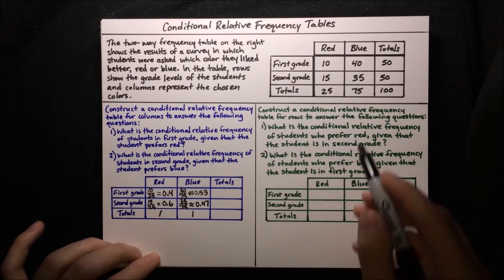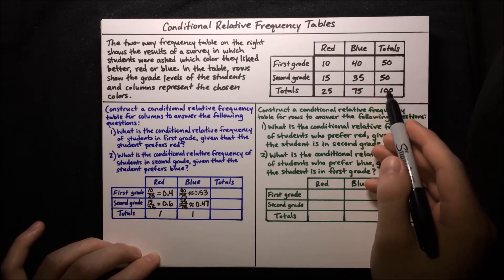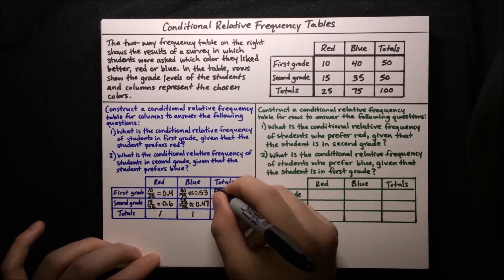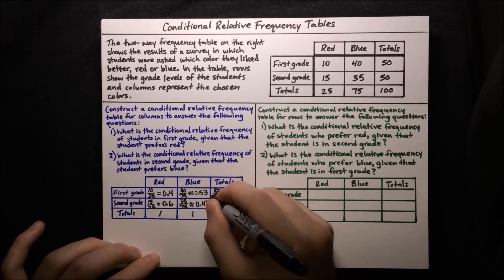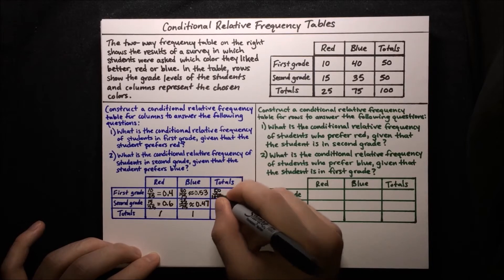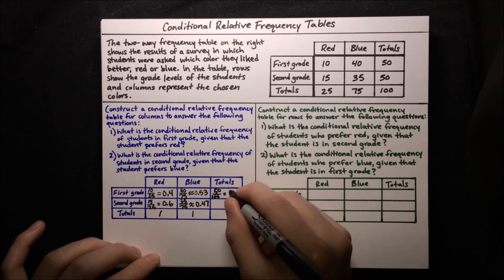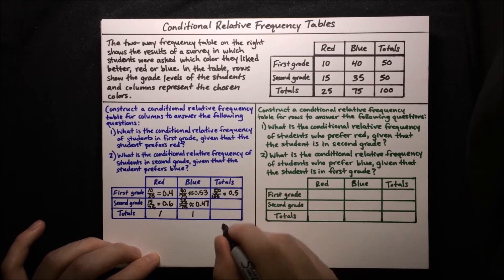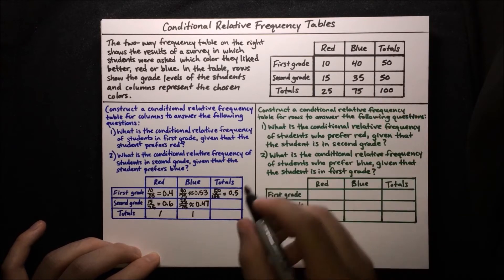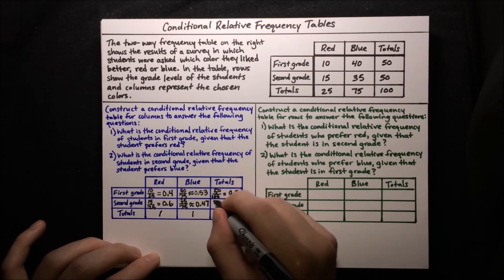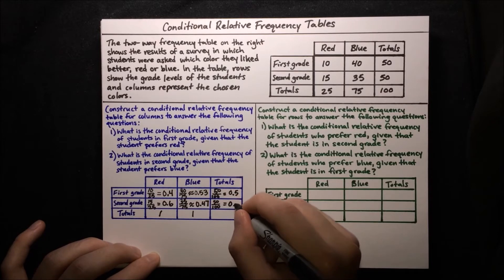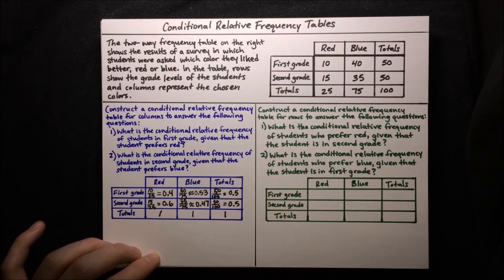We can move on to the totals column now. So 50 divided by 100 is 0.5, and below that we also have 50, so 50 over 100 is 0.5. Those sum to 1.